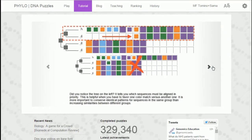Wow, this looks pretty crazy. Did you notice the tree on the left? It tells you which sequences must be aligned in priority. This is helpful when you have to favor one color match versus another. It's more important to conserve identical patterns for sequences in the same group rather than increasing similarities between different groups.